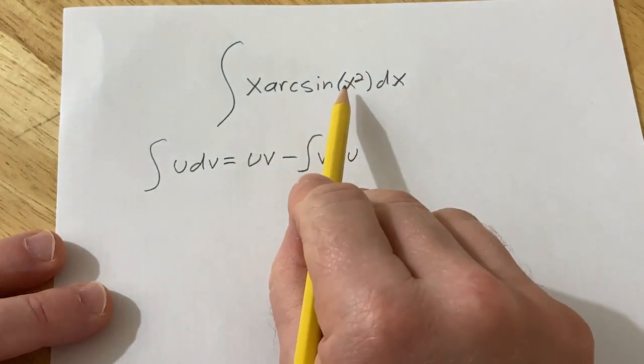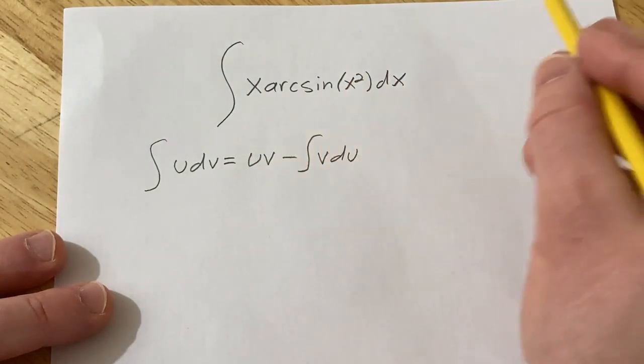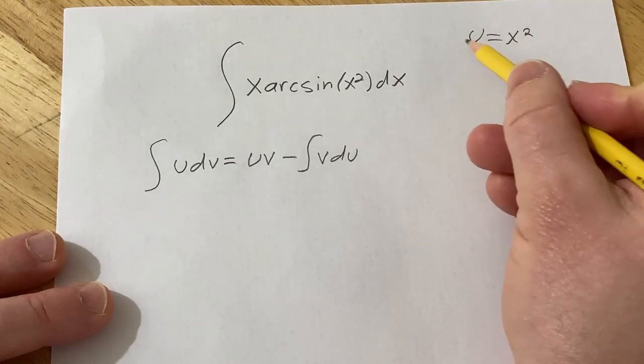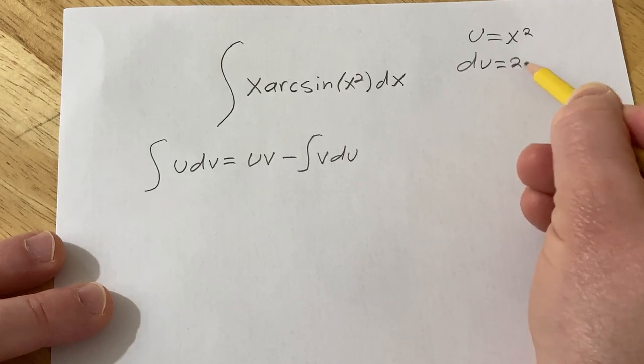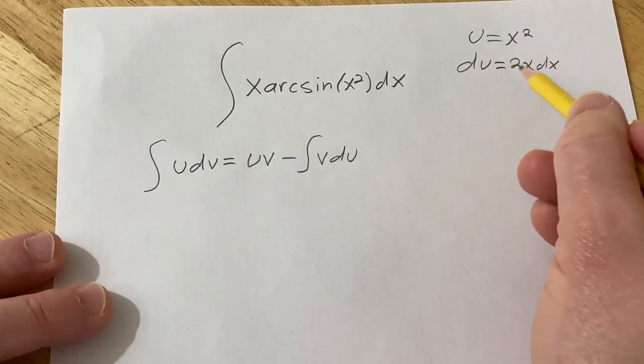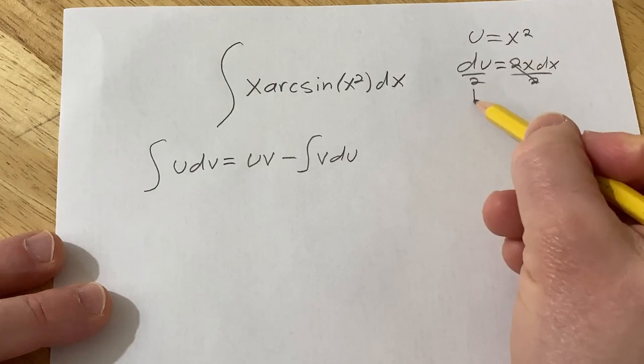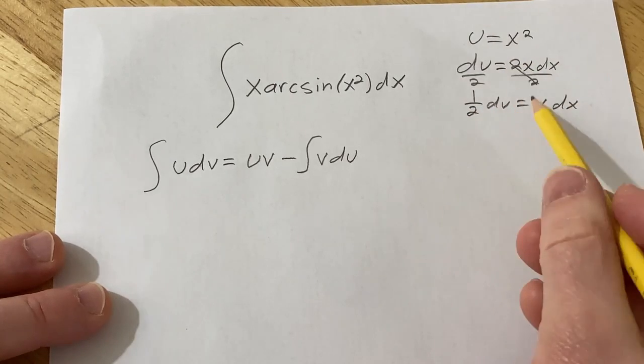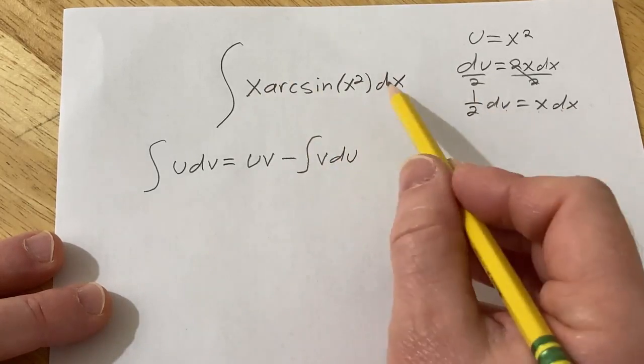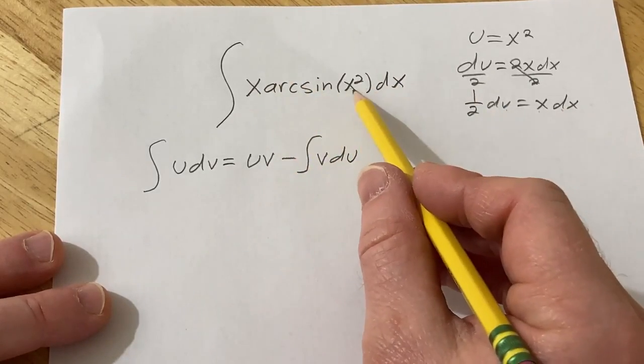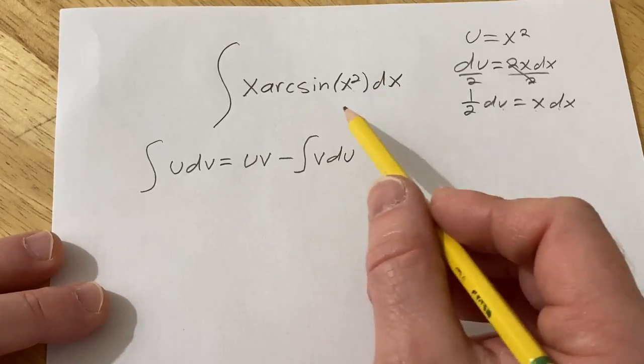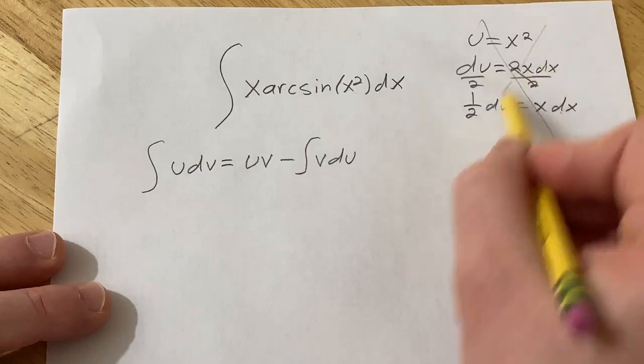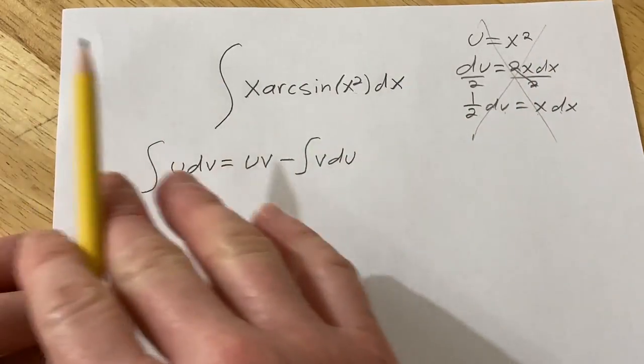However, I want to mention that when you first see this problem, you're tempted to do this. You're tempted to let U be equal to x squared, in which case, taking the derivative of both sides, you get dU equals 2x dx. And then you could divide by 2. So you have 1 half dU equals x dx. And then basically, your x dx is here. It becomes 1 half dU, and you just get 1 half arcsin U. However, to integrate arcsin U, you actually need to use this formula. So what we're going to do is we're going to skip this substitution, and we're going to do it with parts right away.